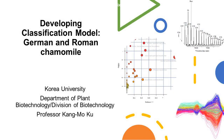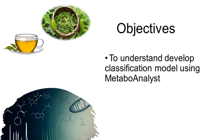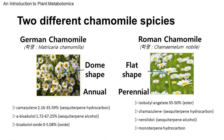In this video we'll learn classification modeling, specifically focusing on the classification of German and Roman chamomile. The objectives of this lecture are to understand and develop a classification model using MetaboAnalyst, so students can apply this method to their own research. In our lab, we've collected volatile organic compounds from German and Roman chamomile essential oils to create this dataset.